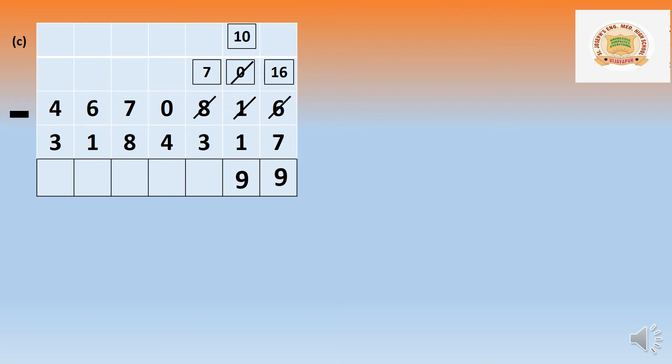Seven is bigger than three — no need to borrow. Seven minus three equals four. That is seven hundred minus three hundred equals four hundred.